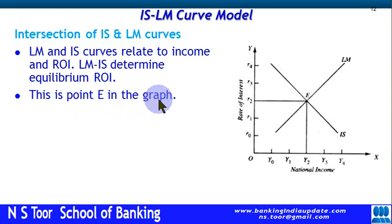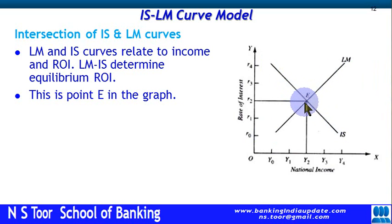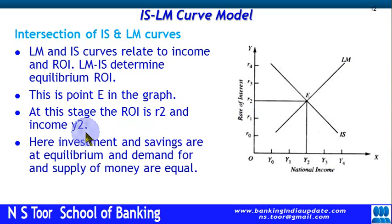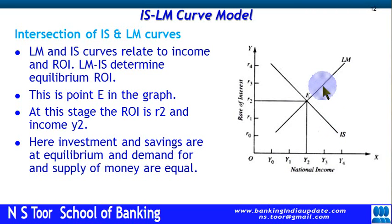At point E in the graph, there is equilibrium. This is the IS curve and this is the LM curve — at their intersection, R2 is the equilibrium rate of interest and Y2 is the income level. It determines both the income level and the rate of interest. At this stage, investment and savings are at equilibrium and demand and supply of money are equal. If there is a change in income level, that will affect the IS curve, the LM curve, or both, and the equilibrium and rate of interest will shift.